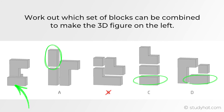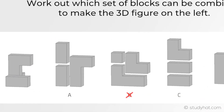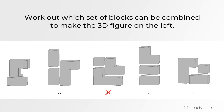Now let's take a look at the L shape figure and go through the remaining answers. We are looking for this L shape in any of the remaining options. A does have this shape so we can't cross it out just yet. C doesn't have this L shape — if you spot the mistake, it's that C's figure is slightly shorter than the one given in the figure on the left. D also has this L shape, so we are left with both A and D.